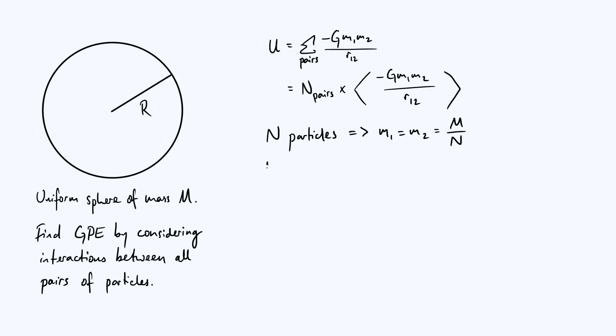So let's combine all this together and see what we've got for the potential energy. So we've still got our n_pairs factor. The minus G m1 m2 bit inside the angle brackets is actually a constant, right, because we've split it up into particles or elements of equal mass. So we can pull that out and get minus G capital M squared divided by N squared. But we still have to average over the reciprocal distance, 1 over r12.